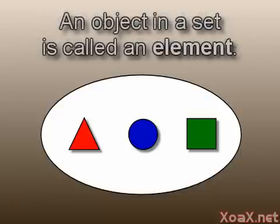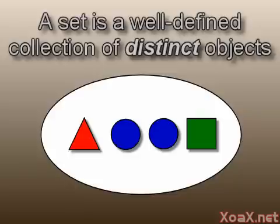The objects in a set are referred to as elements. The elements of a set must be distinct by definition. This collection of objects, for example, is not a set because it contains two circles and the elements fail to be distinct.